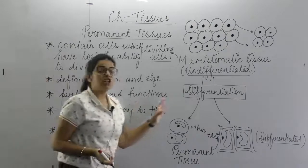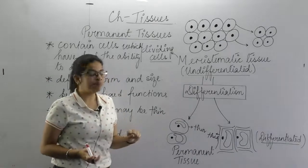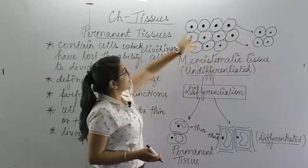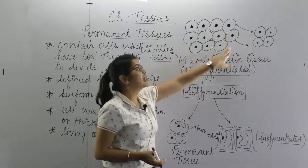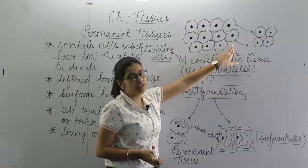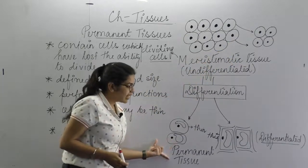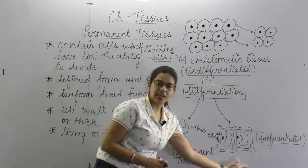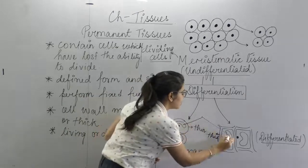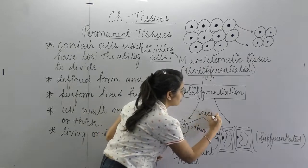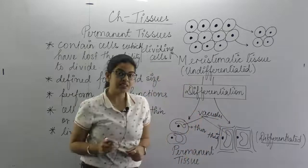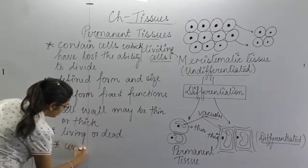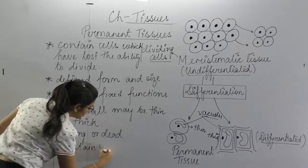And one more important point: in the last video we discussed that meristematic tissue cells do not have vacuoles — that is why I did not draw any vacuoles there. But now, if you look at my diagram again, I have drawn two different types of cells, and in both cells what is present? Vacuoles. So permanent tissues always contain vacuoles in them.